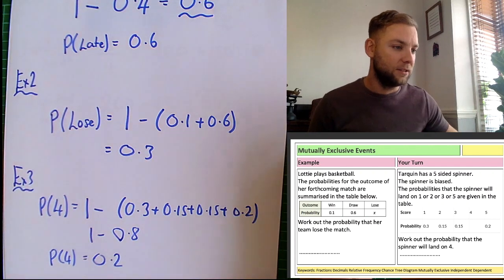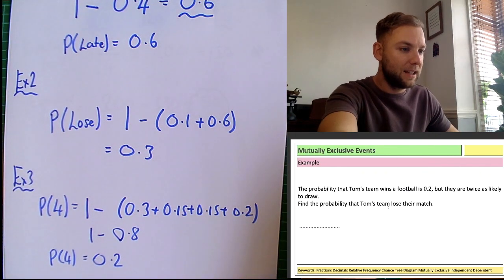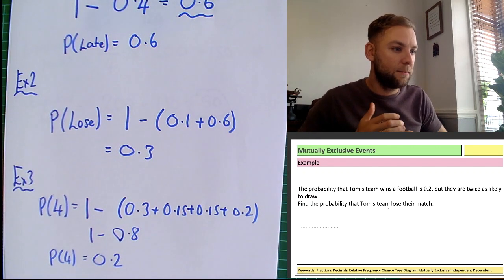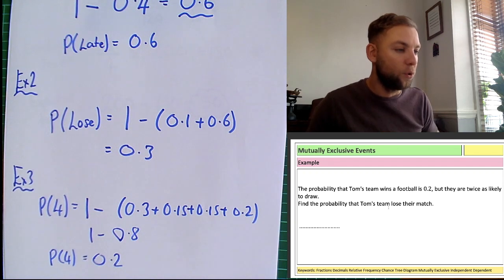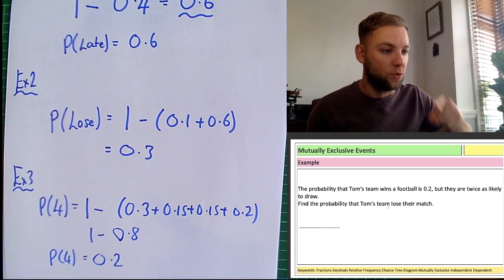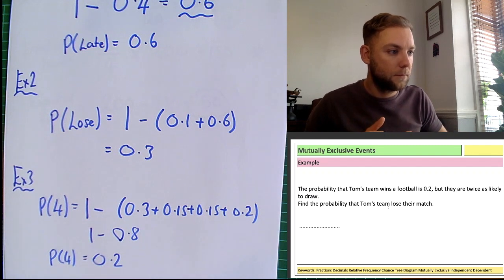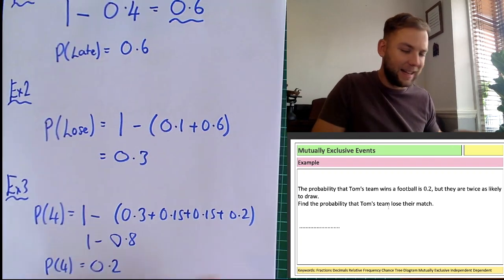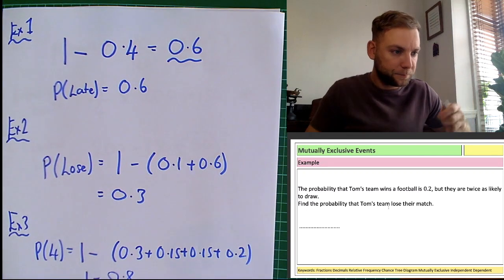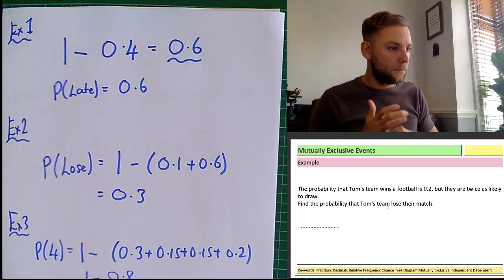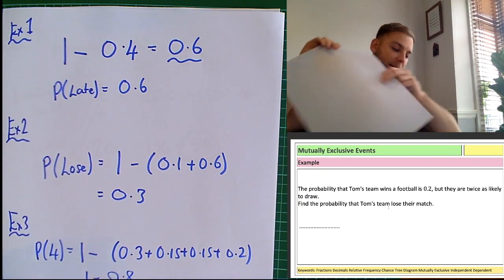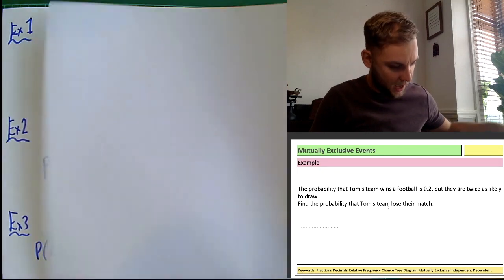Let's take it to the next level. The probability that Tom's team wins a football match is 0.2, but they are twice as likely to draw. Find the probability that Tom's team loses their match. This is taking it just a little bit further — we've got three different options here for Tom. This is example four.